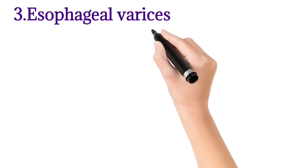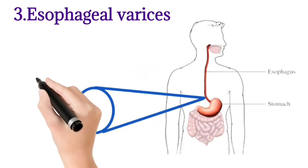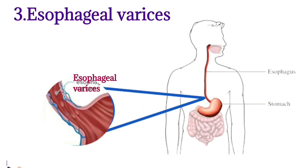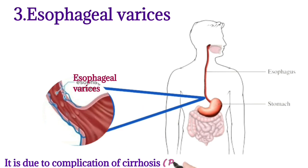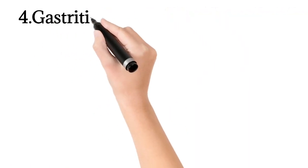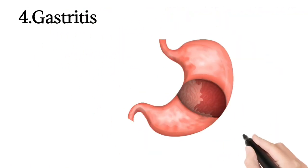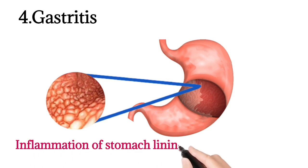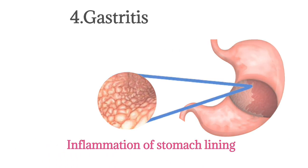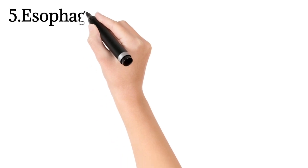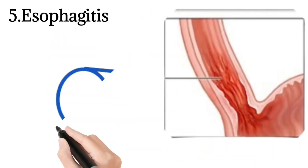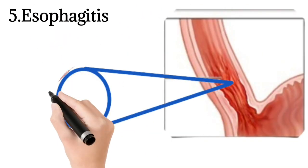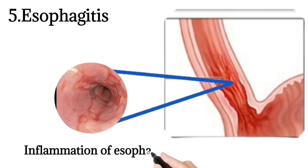The third cause is esophageal varices — you can see them in the picture. Esophageal varices are due to complications of cirrhosis, which is portal hypertension. The fourth cause is gastritis, which is inflammation of the stomach lining. The fifth cause is esophagitis, defined as inflammation of the esophagus lining.